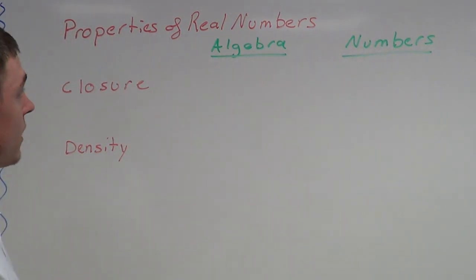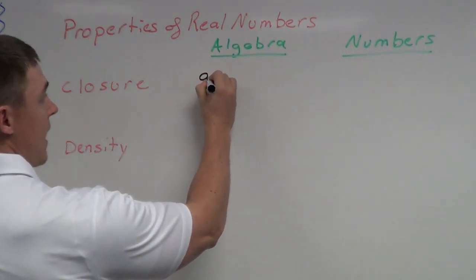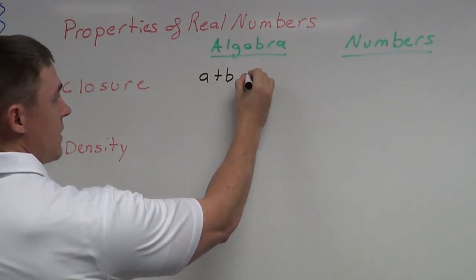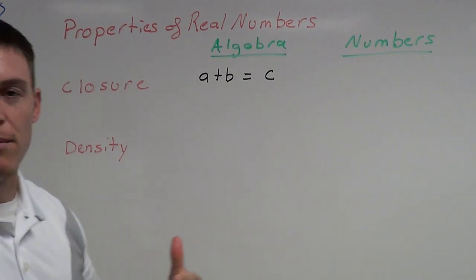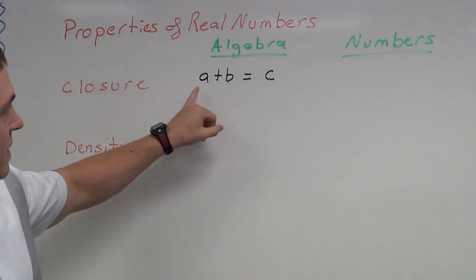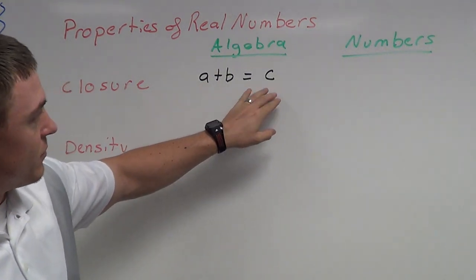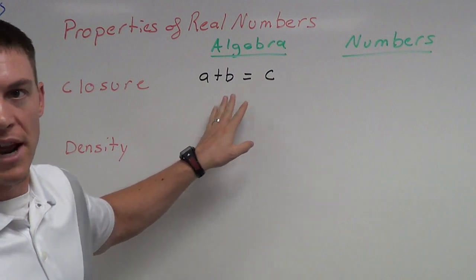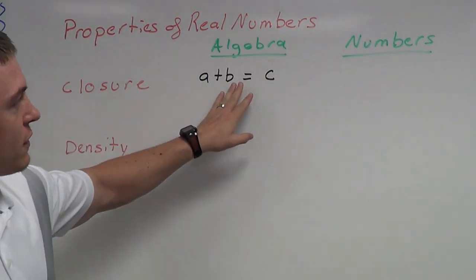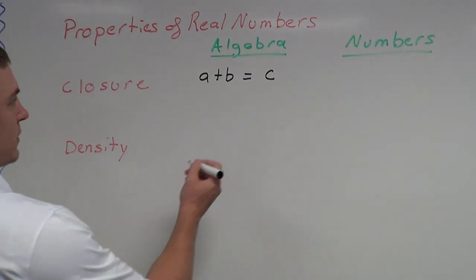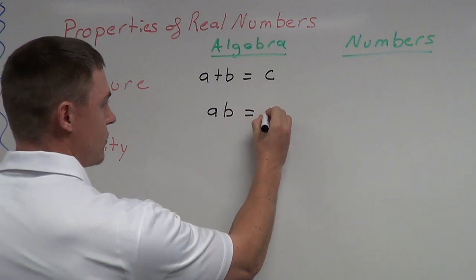So what does that look like with the algebra? We'll use variables A and B. A plus B equals C — meaning if A and B are real numbers, when you add them together you get another real number. A, B, and C are all real numbers. That's the closure property for addition. For multiplication: A times B equals D.